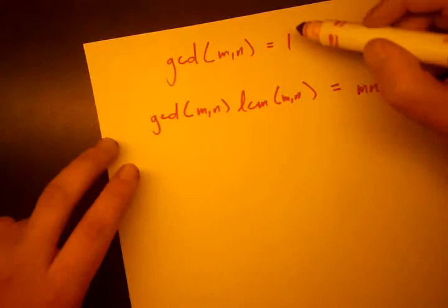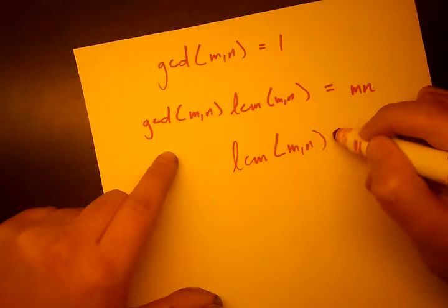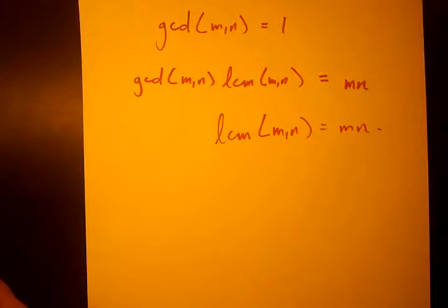So this is our formula. That means GCD times LCM equals MN. So if GCD equals 1, that means that LCM of M and N equals MN. So this is going to be an important result as we go on proving our theorems.